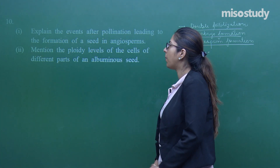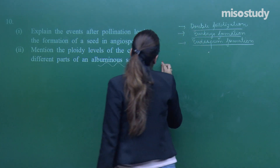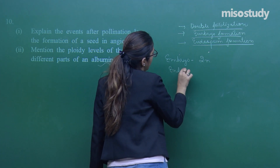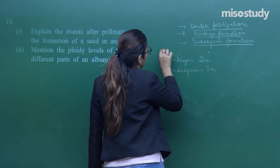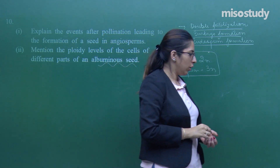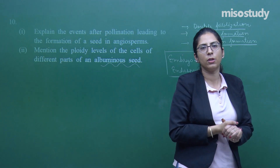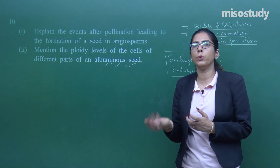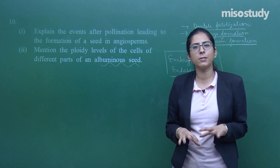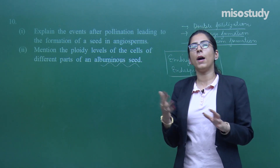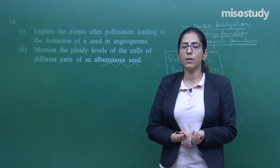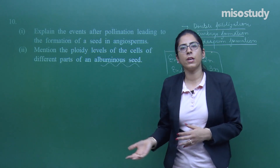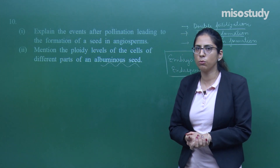The second part: 'Mention the ploidy levels of the cells of the different parts of an albuminous seed.' In this case, the embryo will be diploid, whereas the endosperm will be triploid. So we have discussed 10 questions from different categories. For details of what to write, go back to the relevant sessions. If you remember the sessions, well and good — if not, go back, watch them again, draw the diagrams, and make your own notes.